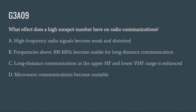G3A09: What effect does a high sunspot number have on radio communications? A. High frequency radio signals become weak and distorted. B. Frequencies above 300 MHz become usable for long distance communication. C. Long distance communication in the upper HF and lower VHF range is enhanced. Or D. Microwave communication becomes unstable. The correct answer is C: long distance communication in the upper HF and lower VHF range is enhanced.